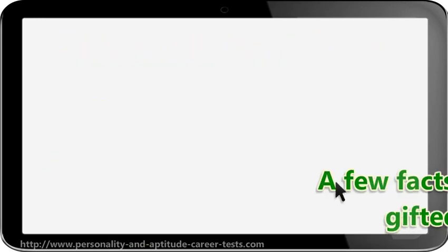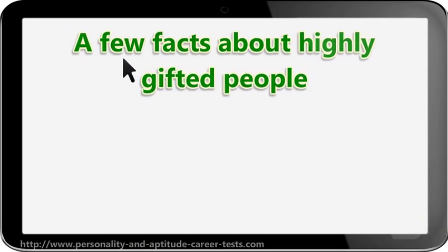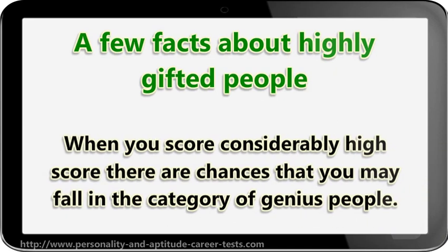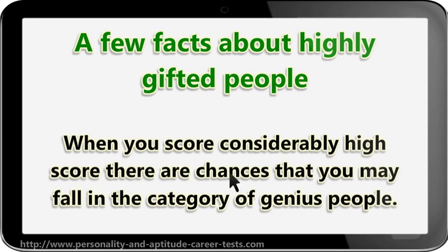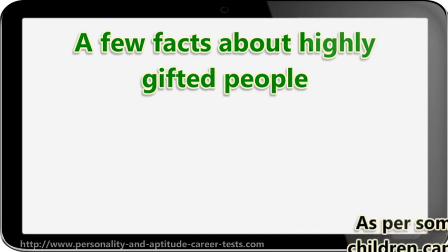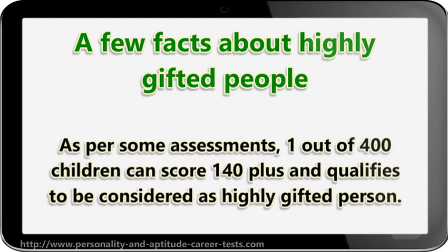A few facts about highly gifted people. When you score a considerably high score, there are chances that you may fall in the category of genius people. As per some assessments, 1 out of 400 children can score 140 plus and qualifies to be considered as a highly gifted person.